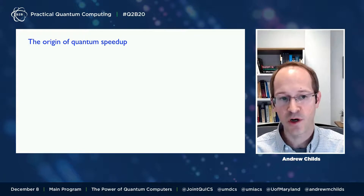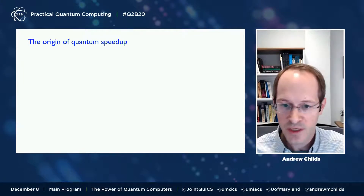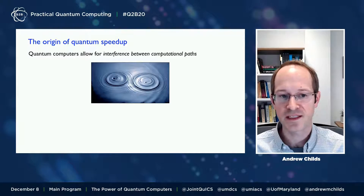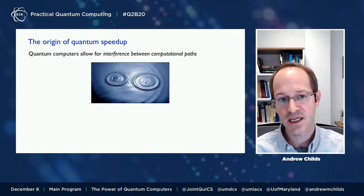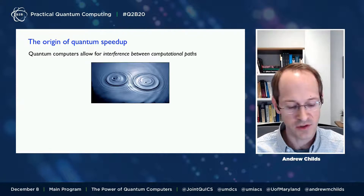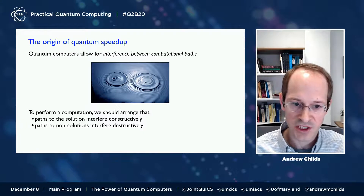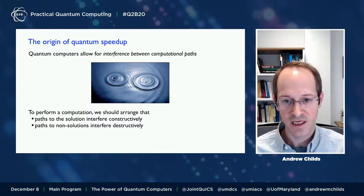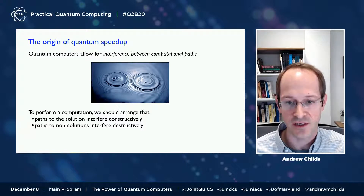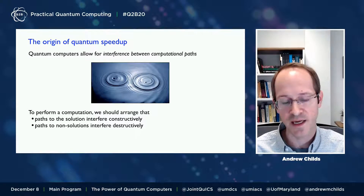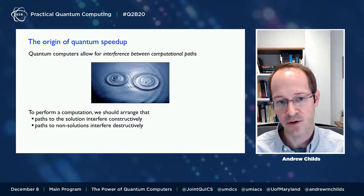Where does the speedup from quantum computers come from? This is a difficult question to answer concisely. But if I had to point to one thing as a source of the power of quantum computers, it's that in a quantum computer, you can have interference between different computational paths — much like waves interfering on the surface of a pond. We want to arrange the computation so that paths to the solution interfere constructively and add together, while paths leading to non-solutions interfere destructively and don't appear in the final answer. We carefully choreograph the interference in our quantum mechanical system to do what we want.